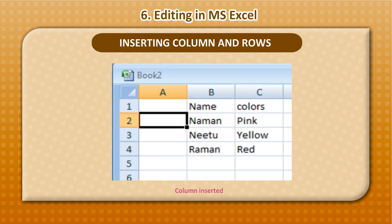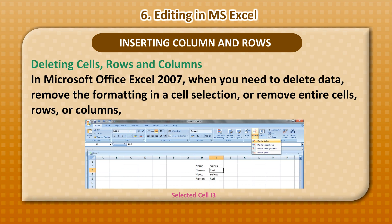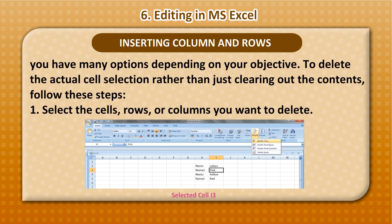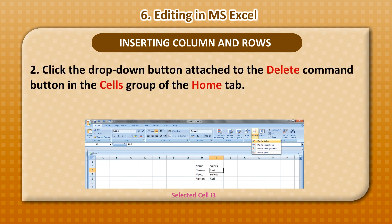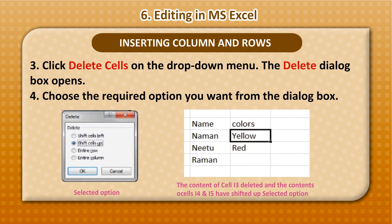Deleting Cells, Rows, and Columns: In Microsoft Office Excel 2007, when you need to delete data, remove formatting, or remove entire cells, rows, or columns, follow these steps. Select the cells, rows, or columns you want to delete. Click the drop-down button attached to the Delete command button in the Cells group of the Home tab. Click Delete Cells on the drop-down menu — the Delete dialog box opens. Choose the required option from the dialog box.